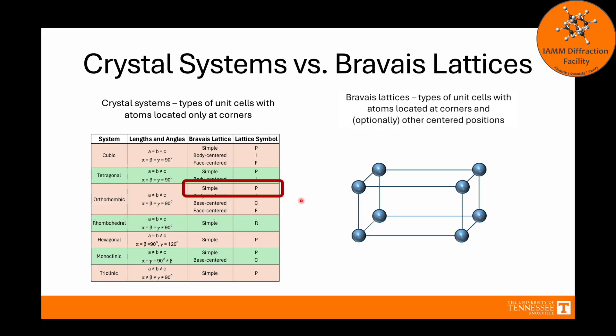First off, we have simple. It has the lattice symbol P, unless you are in the rhombohedral system, in which case it is listed as R, but I'm not going to get into that. Simple is just what we have been looking at. It is whatever the crystal system is. It is the ones with atoms only at the corners. We don't have to go into further detail on this one because we have already covered it pretty well.